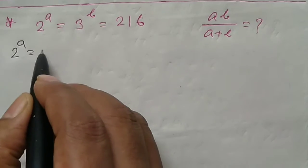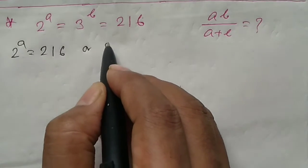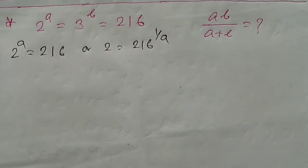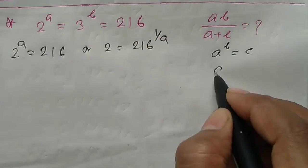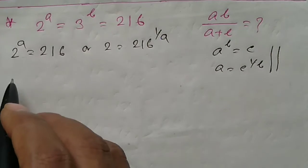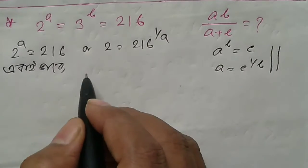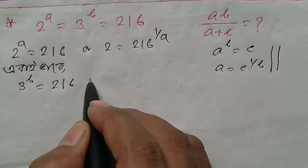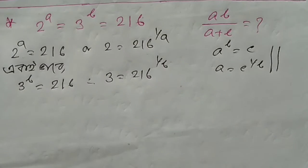From 2 to the power A equals 216, we get 2 equals 216 to the power 1 by A. Similarly, 3 to the power B equals 216, so 3 equals 216 to the power 1 by B.